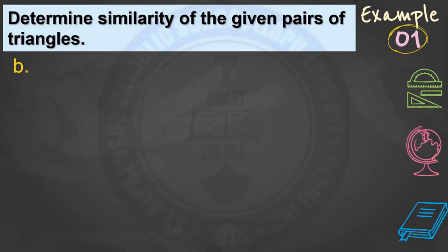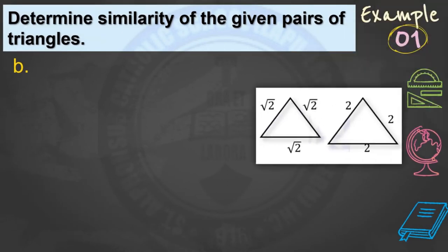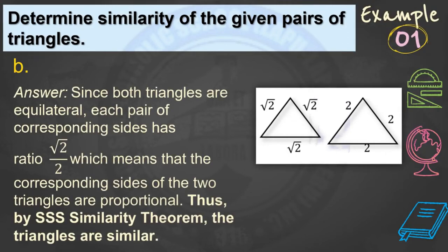Consider the second figure. Since both triangles are equilateral, all sides are equal, and each pair of corresponding sides has the same ratio of square root of 2 over 2. This means the corresponding sides of the two triangles are proportional, so by SSS similarity theorem the triangles are similar.